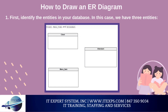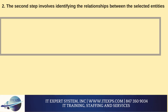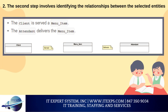How to Draw an ER Diagram: Let's create an ER diagram for a data model using Vertabelo. Consider a simple scenario in which a client orders food at a restaurant. The client must purchase one or more menu items, while each menu item is served by one attendant. First, identify the entities in your database — in this case, we have three entities. The second step involves identifying the relationships between the selected entities. The third step involves identifying cardinalities.